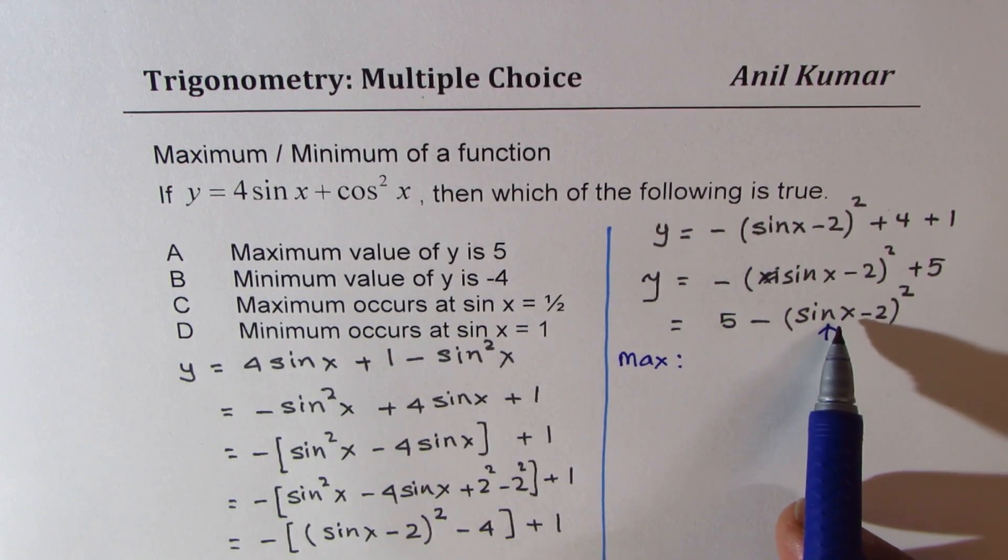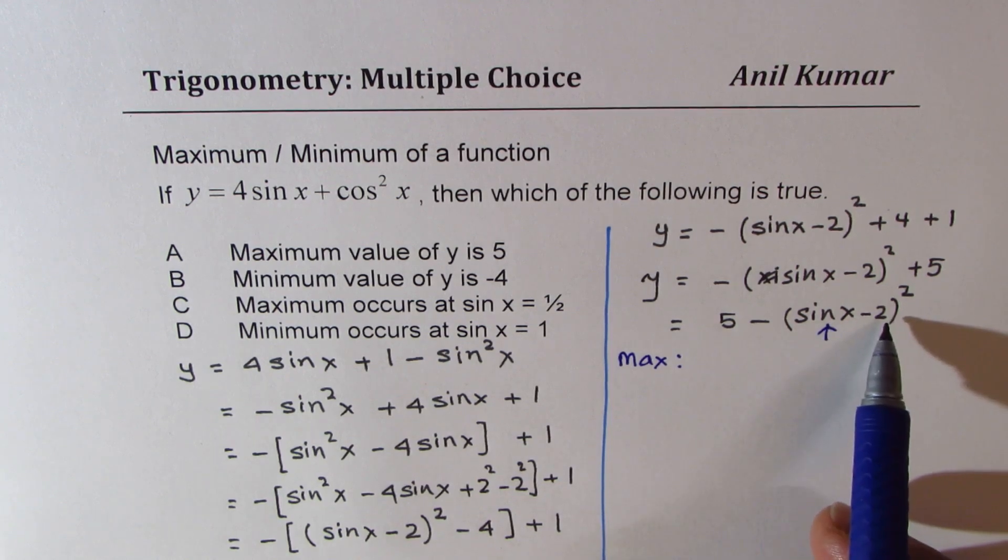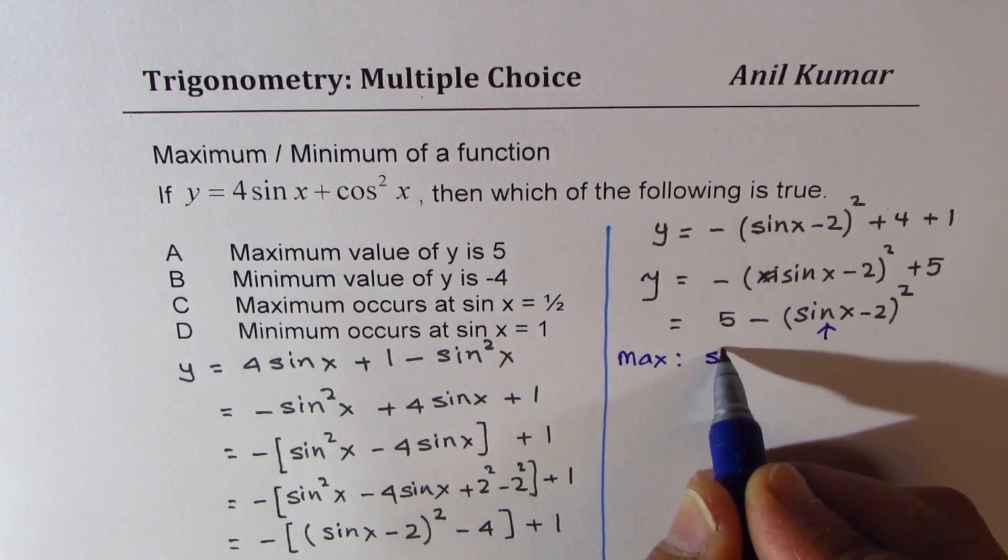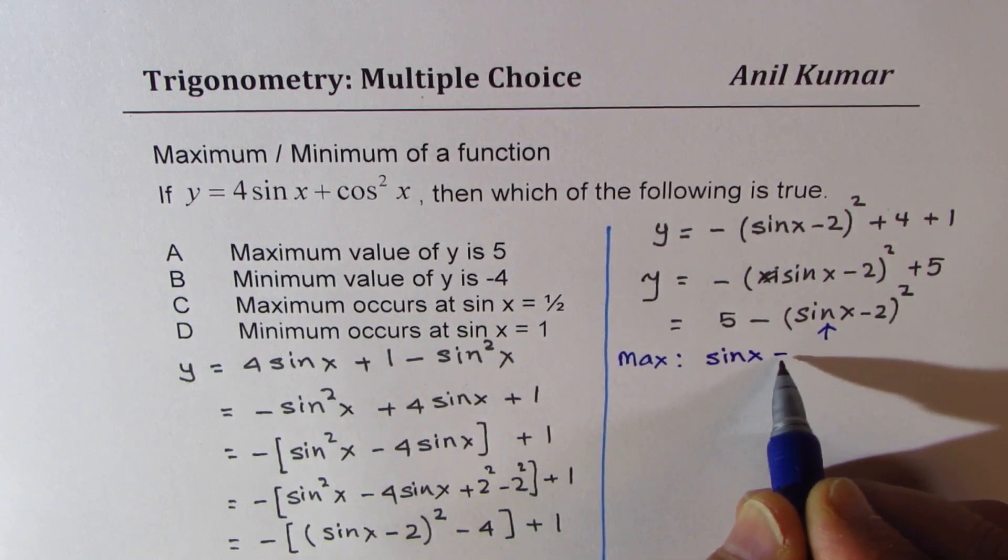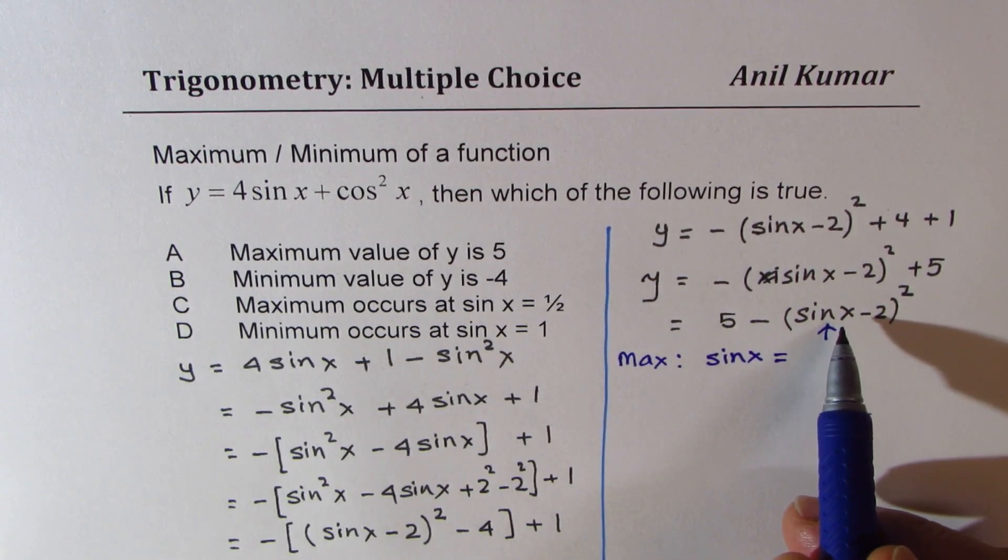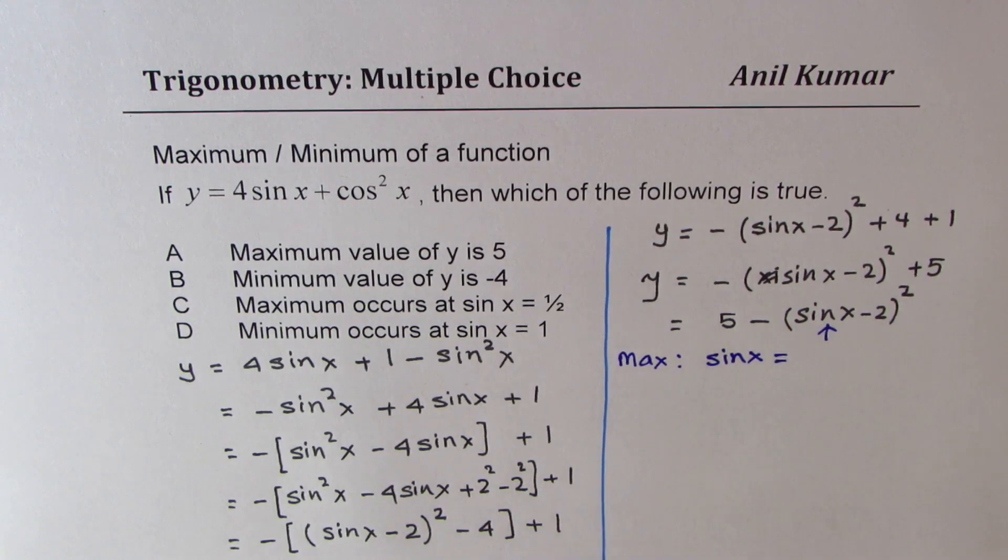So if sine x is 1, for example, in that case, that could be the extreme value. So 1 minus 2 will give us a maximum. So maximum will be when sin x is equal to... Now, if it is 0, so then we are taking away nothing. But it cannot be 0. So the thing is, since it cannot be 0, but it could be 1, that is a maximum value of sin x.